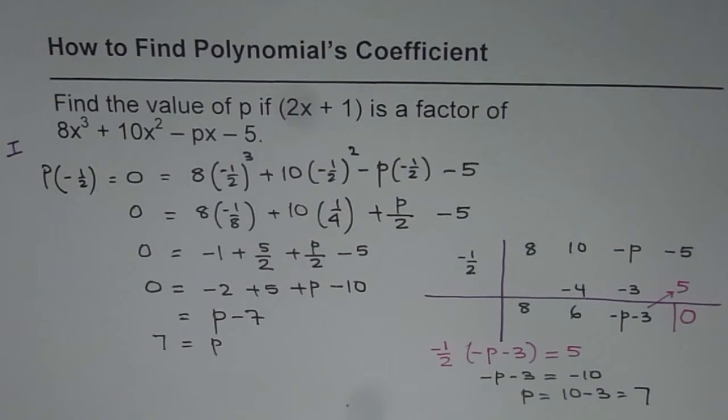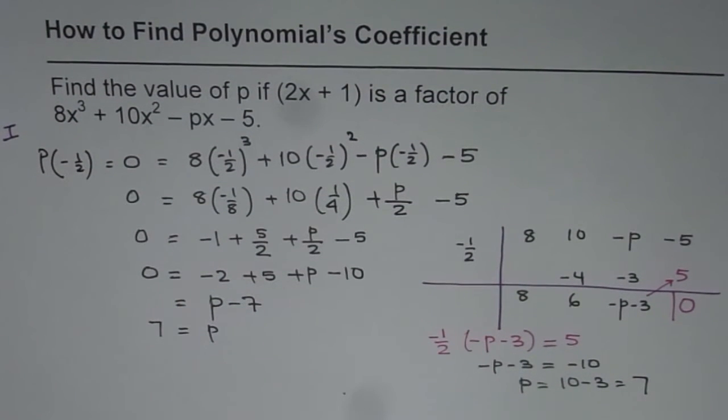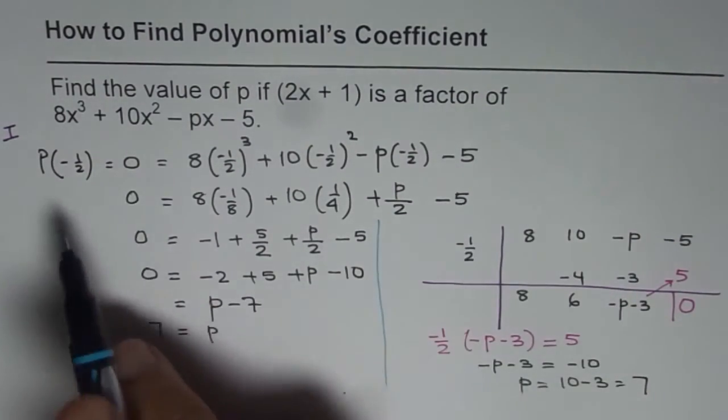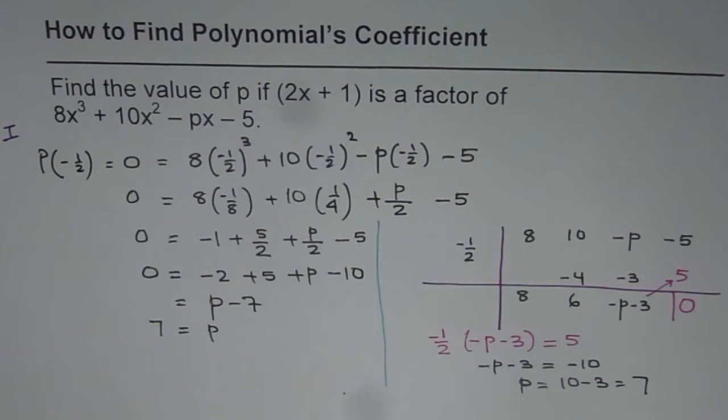So either way, we get the same answer, which is p equals to 7. So you can adopt any method you like. Either you can do factor theorem, or synthetic or long division and get the same answer.